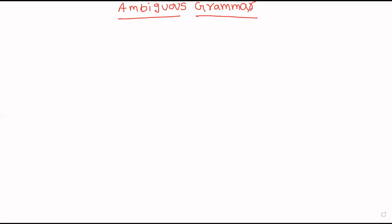Welcome to our channel. Today we will discuss ambiguous grammar. Consider a context-free grammar. Generally, what we are doing from a given context-free grammar is generating strings.